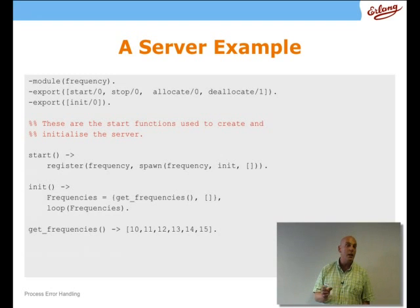And what we do in the init function is we set up some initial frequencies. In fact, what we do is we state here is a pair of lists. The list of frequencies which are not allocated and frequencies which are. And so we initialize this with the frequencies 10 up to 15 as being unallocated and an empty list of already allocated frequencies. And then what will happen is that we will loop through that. So that's the server's state. And each iteration of the loop will see that state change in some way.